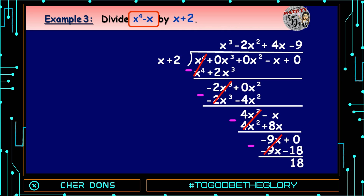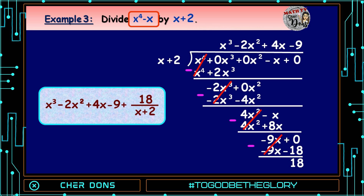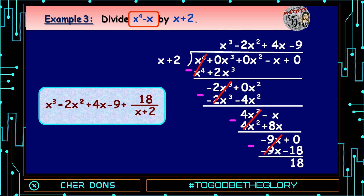18 is the remainder. Our quotient is x³ - 2x² + 4x - 9, and we can write it as x³ - 2x² + 4x - 9 + 18/(x + 2).